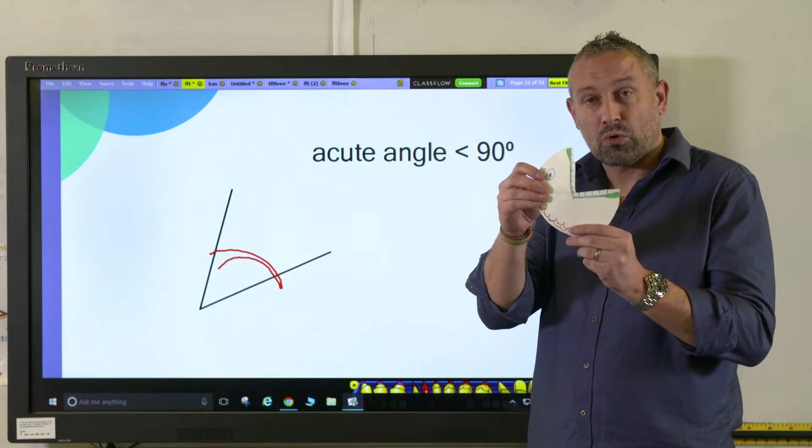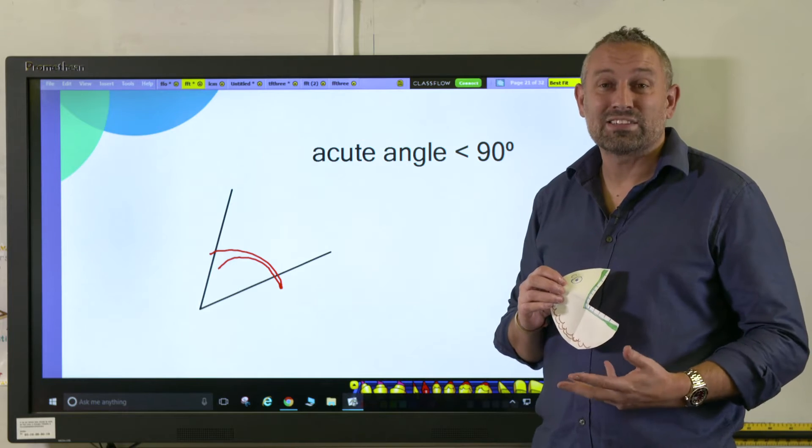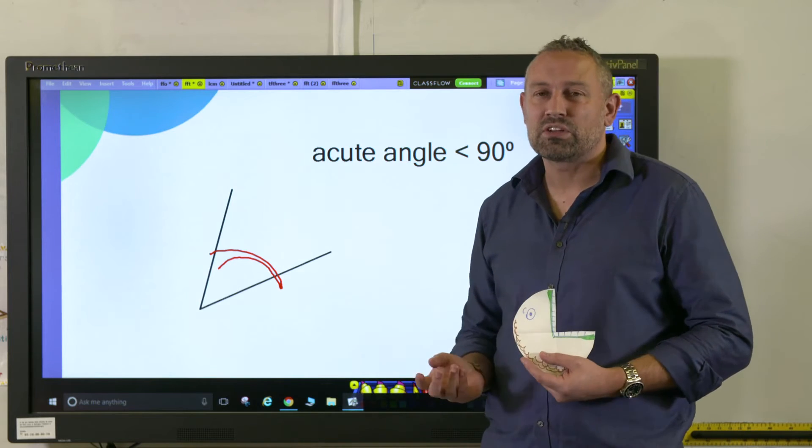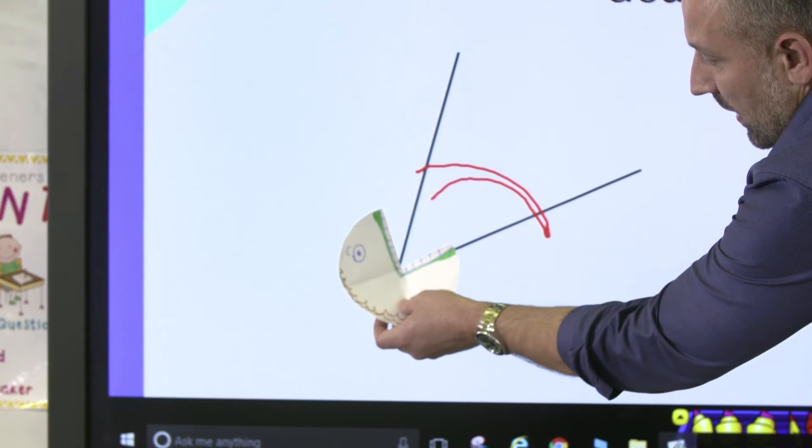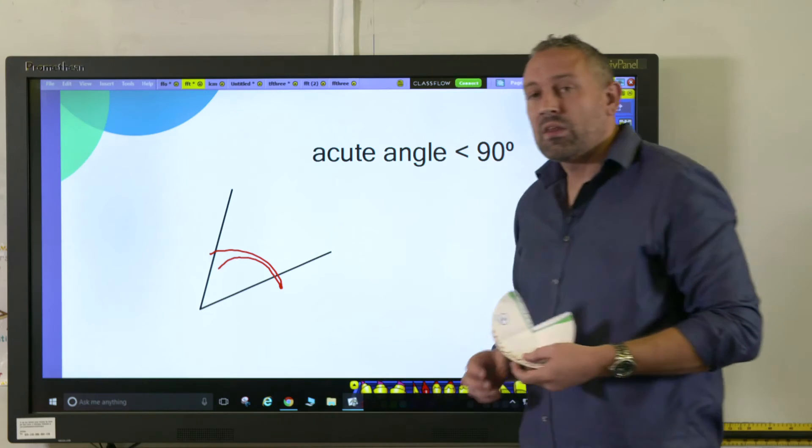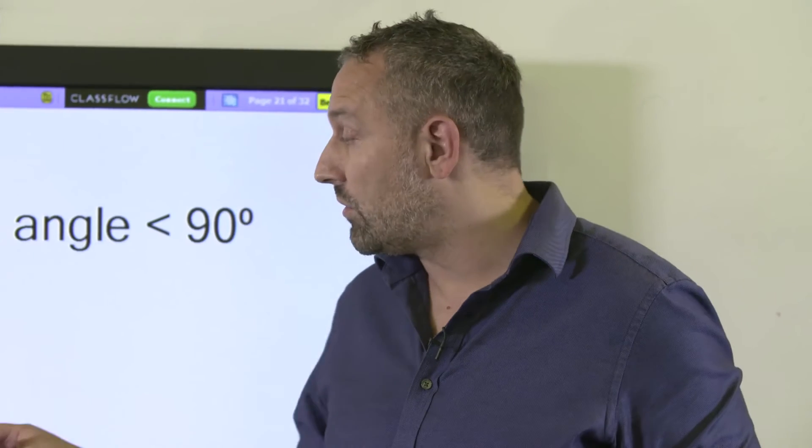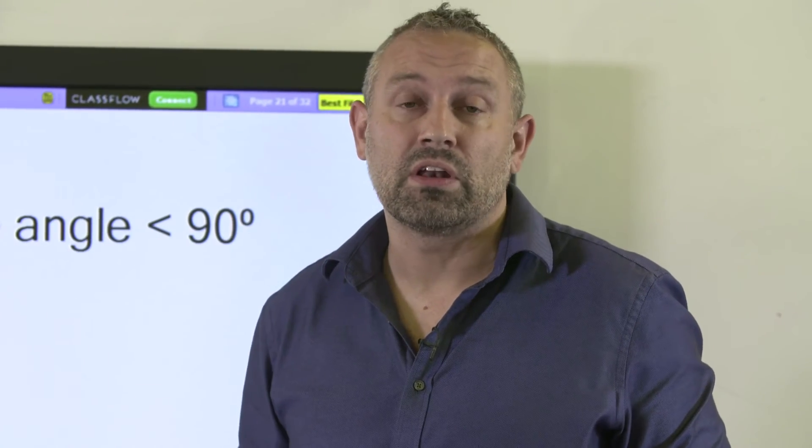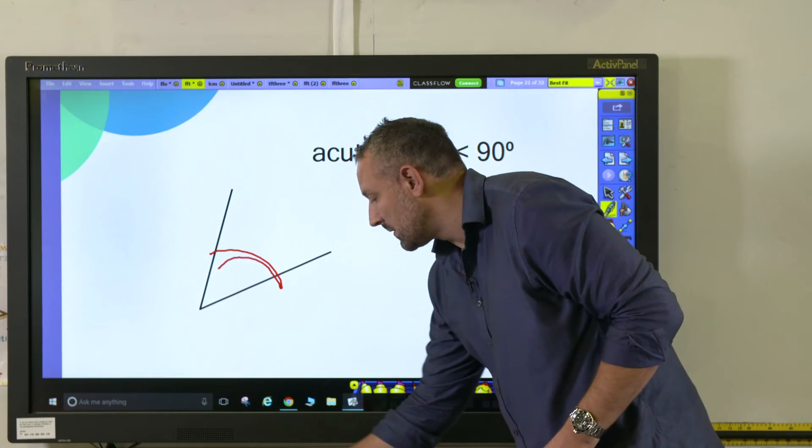The angle eater only eats acute angles, so this is brilliant for the children. I've taught this in year three. You place over like that and then you can see that if the angle fits inside it, it's an acute angle. Again, there is no need for any measuring, there's no need for any numbers. The children can see what acute angles look like.